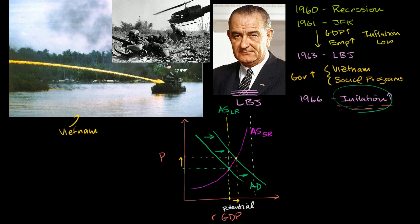We see from this model that what you'd think would happen actually does happen: prices go up. And then over the long run, you really wouldn't be able to sustain this level of producing above your potential. Things would settle back to potential GDP, and all you're left with really is the inflation.